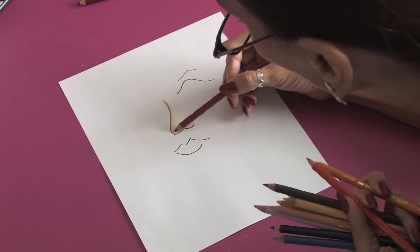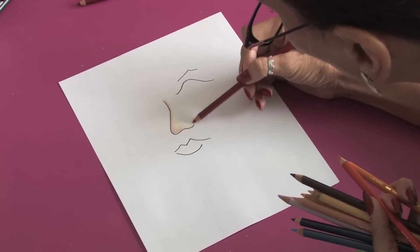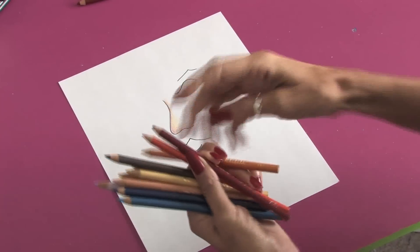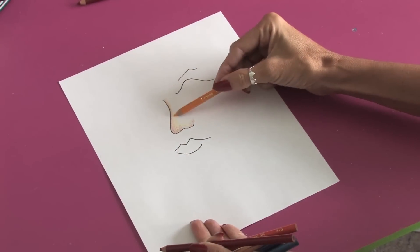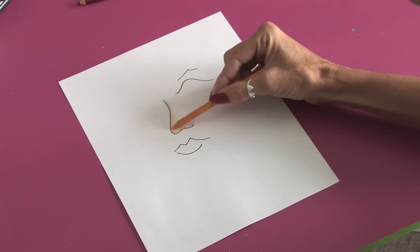You want to keep the edges of the face a little bit darker. And again we'll go back to the yellow and just start blending the colors in, just like this.